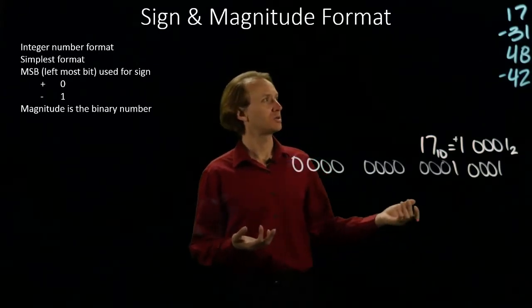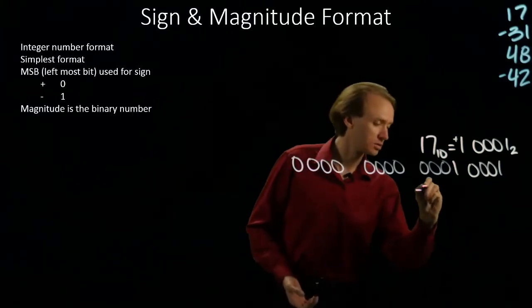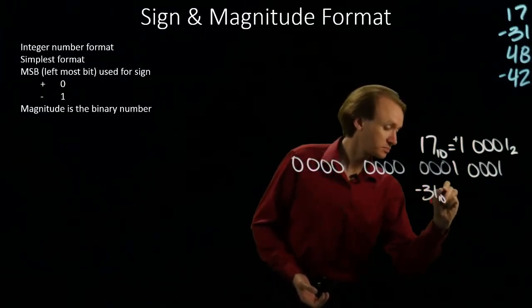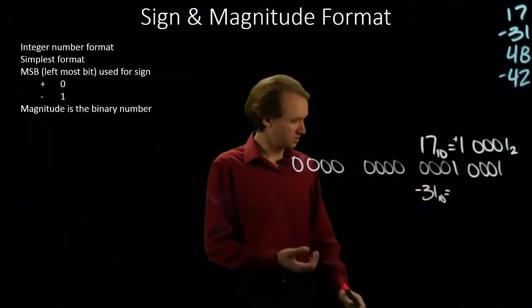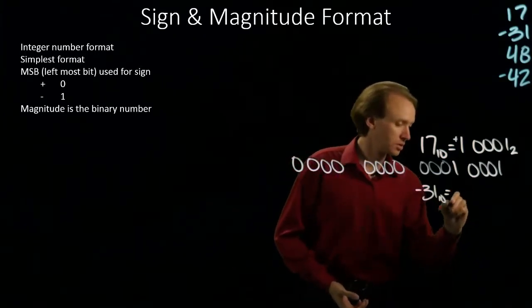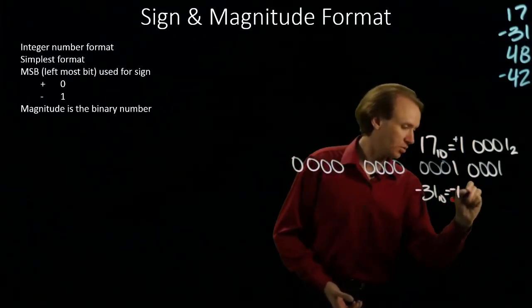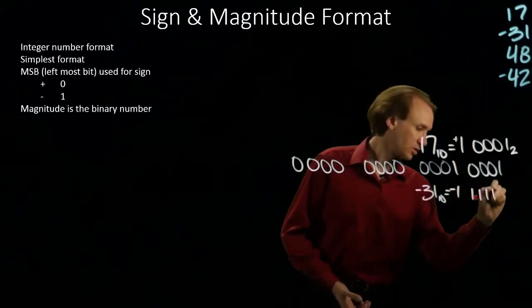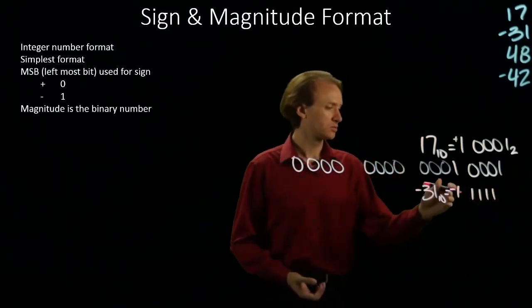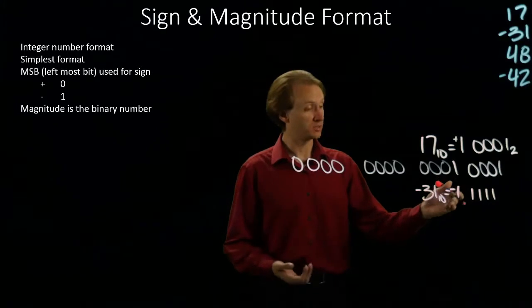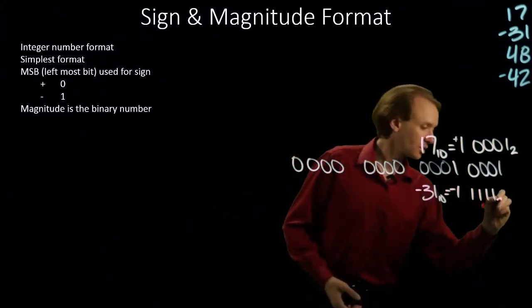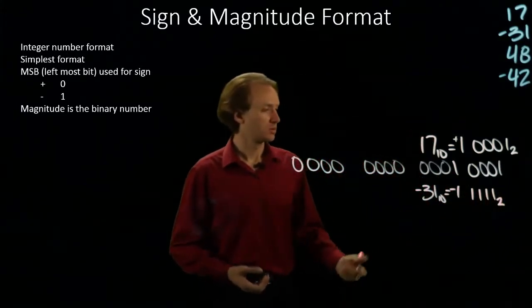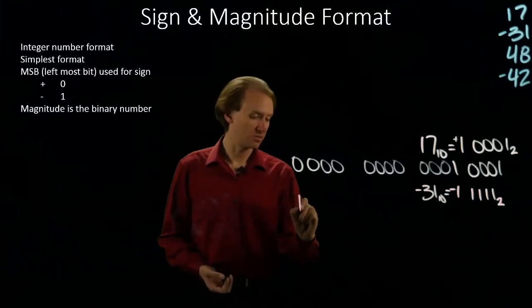Next number is negative 31. This is one less than 32, so I will have every bit after the 32-bit turned on. This is a negative number, so my sign bit will be a 1.